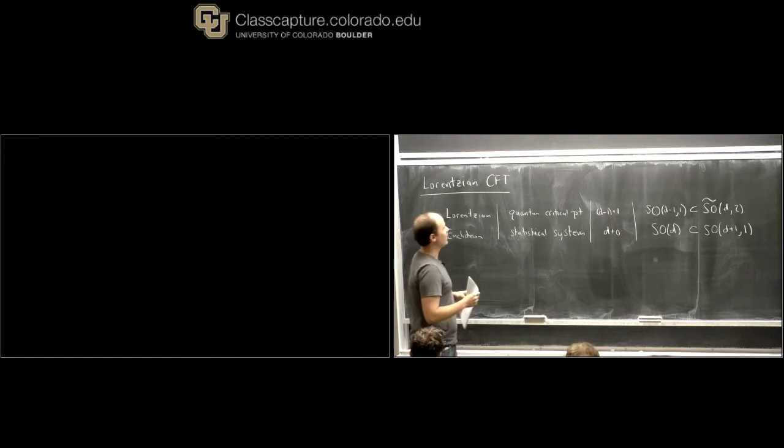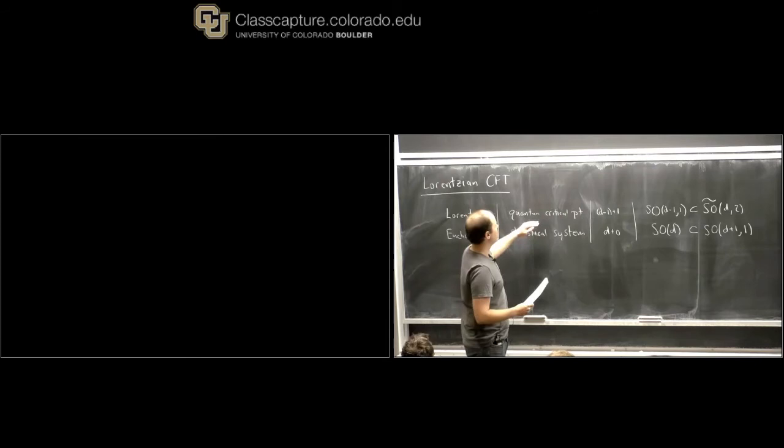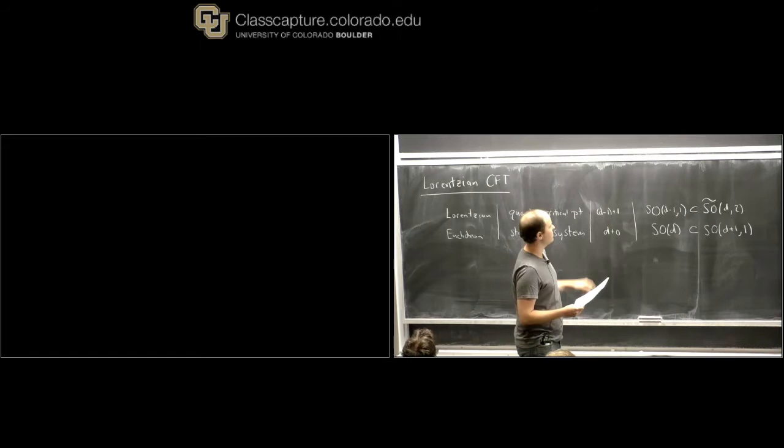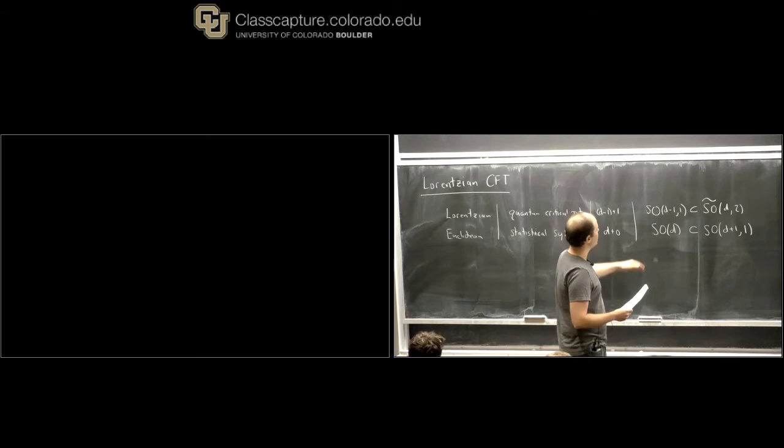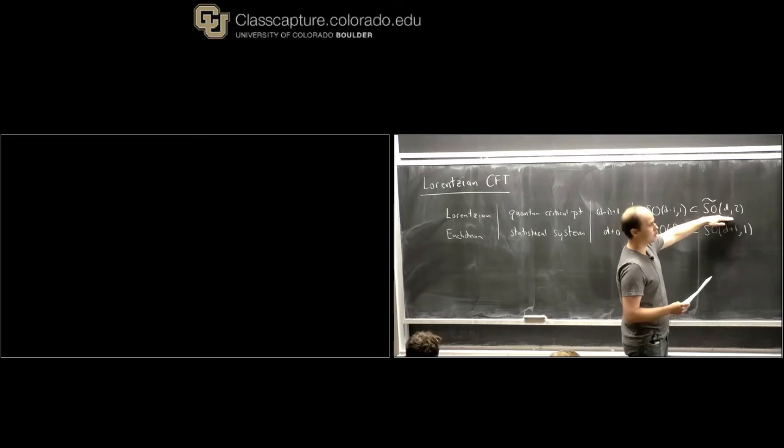So these are lectures on Lorentzian CFT. Both Lorentzian and Euclidean conformal field theories appear across theoretical physics. One way in which Lorentzian CFTs appear is as describing quantum critical points — quantum mechanical systems with one time direction and d minus one spatial directions. In particular, the symmetry group of these systems includes the Lorentz group SO(d-1,1), which is a subgroup of the larger Lorentzian conformal group.